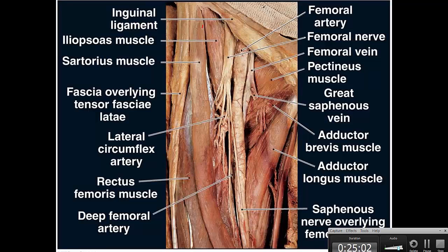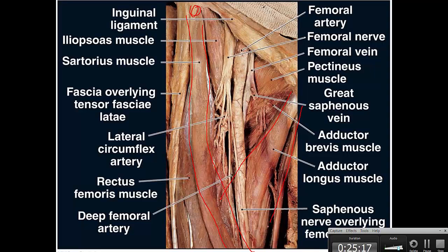Here is a better picture showing the long sartorius muscle running from superiorly and laterally to inferiorly and medially. Next to it is the adductor longus. These muscles form the boundaries of the femoral triangle — with the inguinal ligament at the top, and the floor made by the iliopsoas and pectineus muscles. In this triangle we have the femoral vein, femoral artery, and femoral nerve.